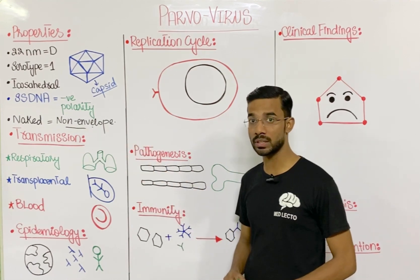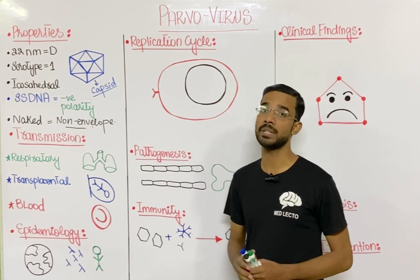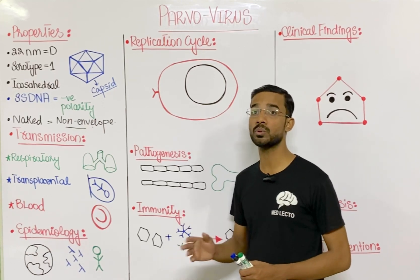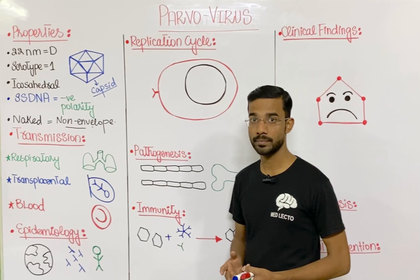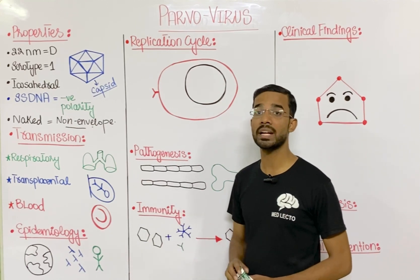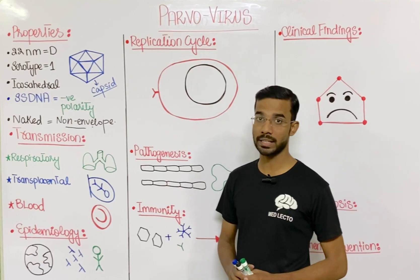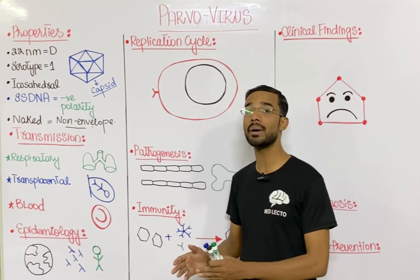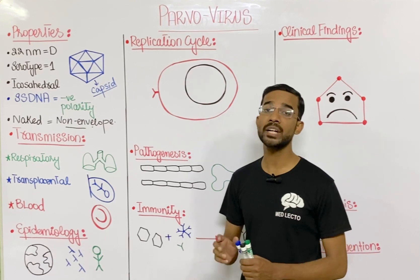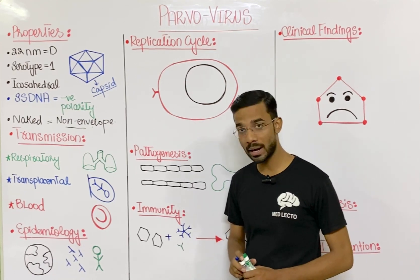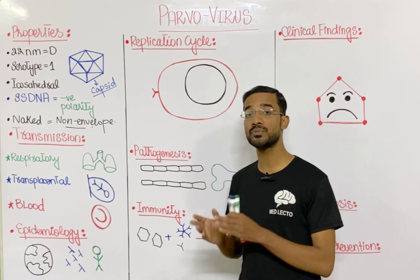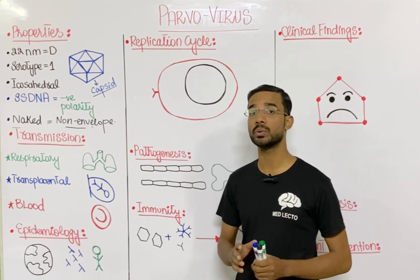Next, how does parvovirus transmit? The most important route is the respiratory route — the virus transmits to humans through the air and the respiratory tract. Second is transplacental transmission, meaning the virus can cross the placenta and transmit from mother to fetus. Third, transmission through blood is important because the virus most importantly infects red blood cells, specifically erythroblasts — immature red cells — so blood transfusion can also transmit the virus.